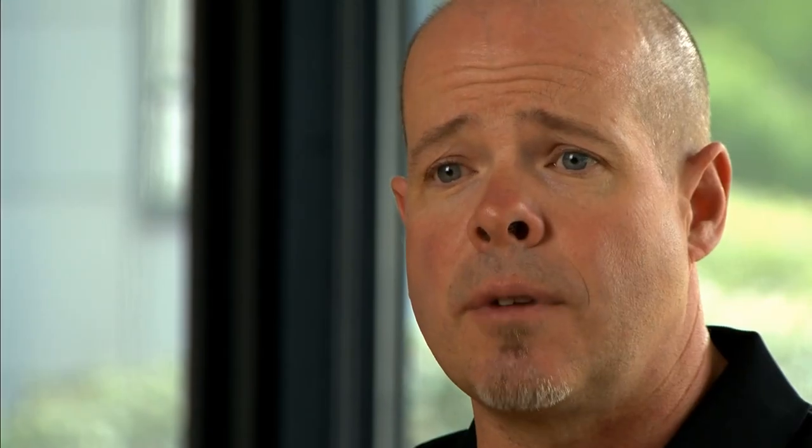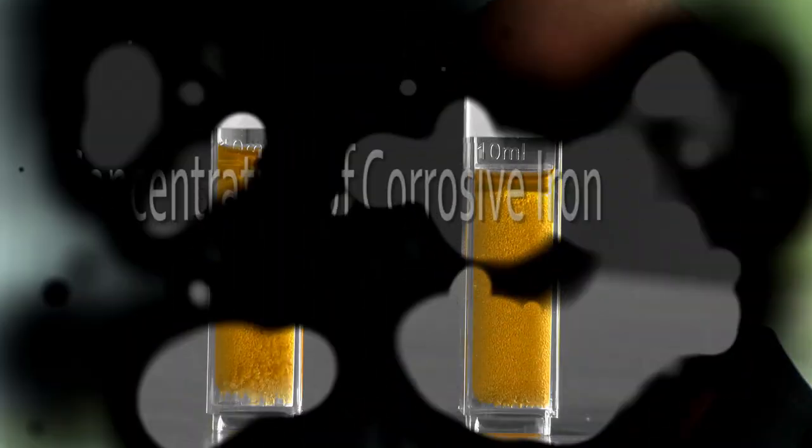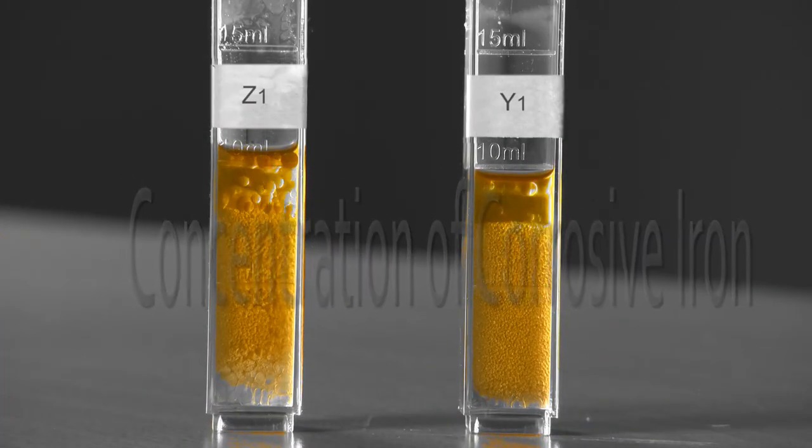It's important to understand both the corrosive iron and the abrasive iron, because they come from two different wearing mechanisms in the engine. Corrosive iron is worn off the engine due to corrosion and the acids present.